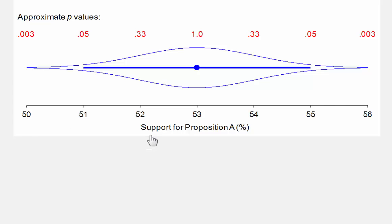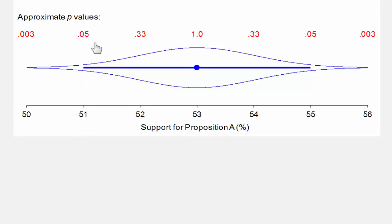If we were testing the null hypothesis of 52, we'd get a much higher p-value. If we happen to be testing a null hypothesis right at one of the limits of the confidence interval, then the p-value is 0.05, corresponding to the 95% confidence interval.